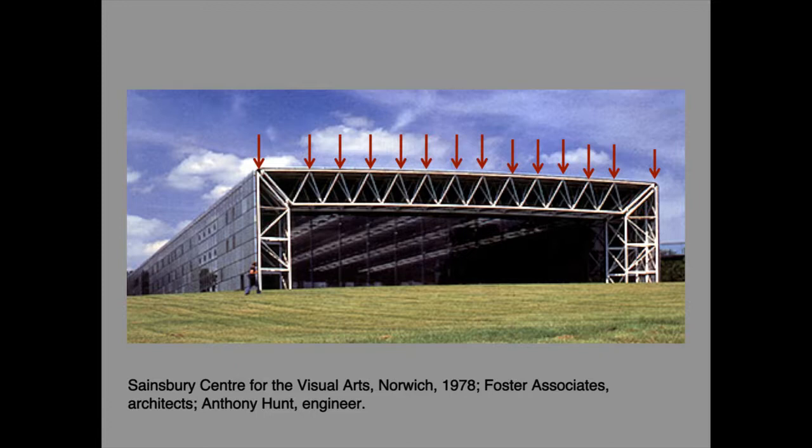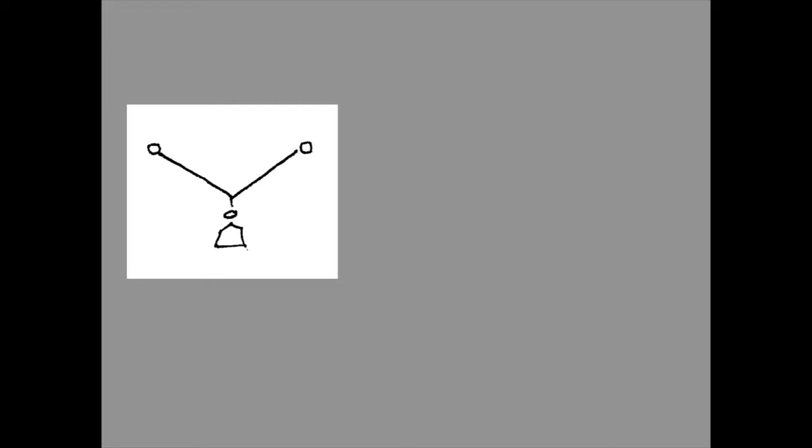It is nevertheless possible to have a horizontally spanning structure in which there is no bending, and to see how this can come about, it is necessary to apply some abstract thinking. Imagine a structure made from flexible material such as string. The only type of internal force that a flexible material can withstand is axial tension. If this is made to carry a load across a horizontal span, a flexible material will take up a shape that allows it to resist through axial tension only. This shape is called the form active shape.